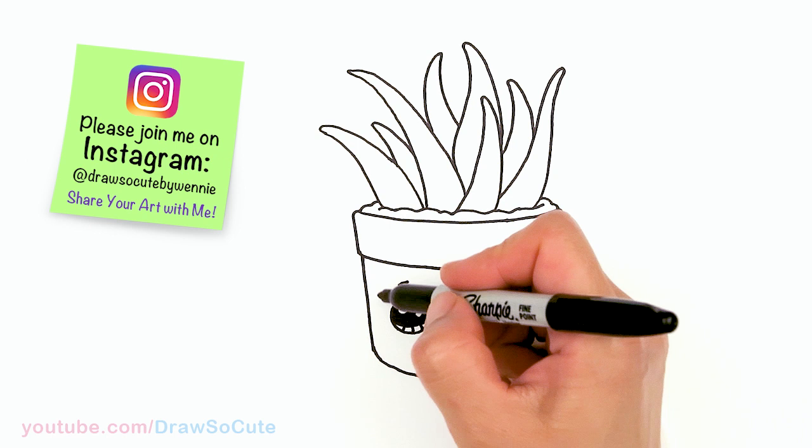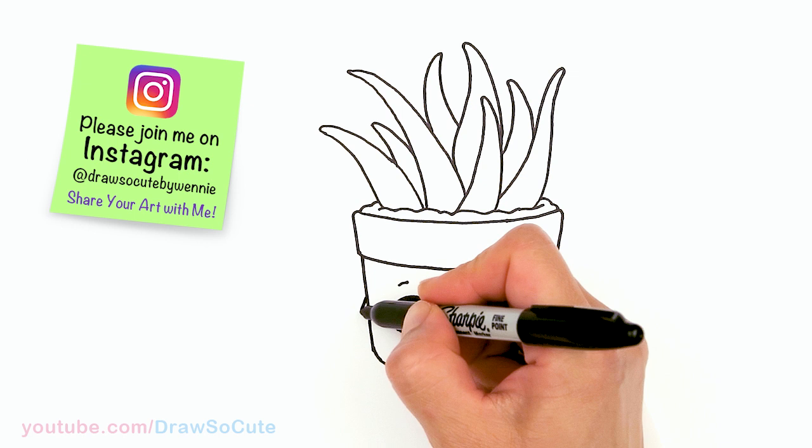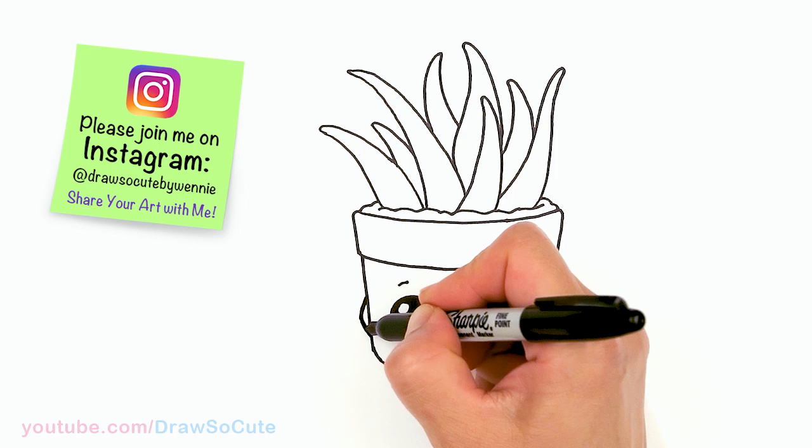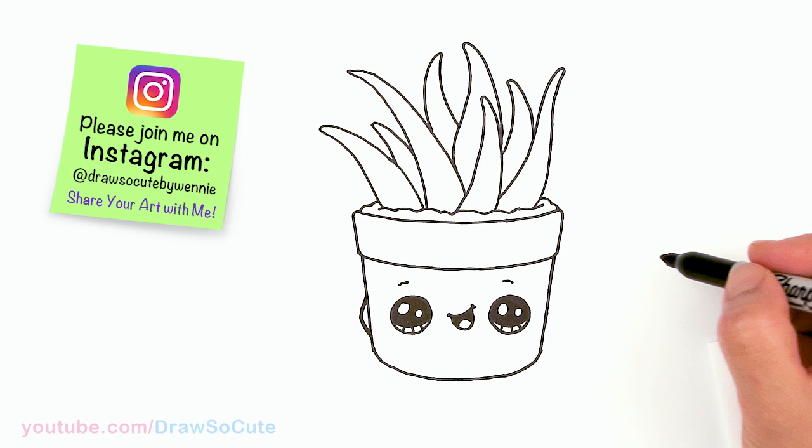So then now for the hands. I'm going to come right here. And about right in this area. I'm just going to tuck in the hand that's behind his pot. Thicken it up. And then this hand, of course, is going to be waving because he's saying hello, right? So about right here.